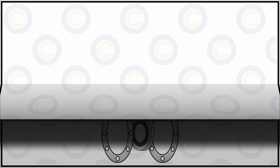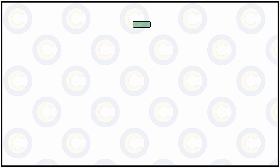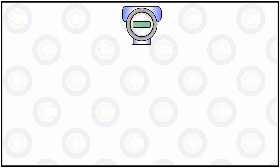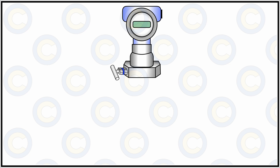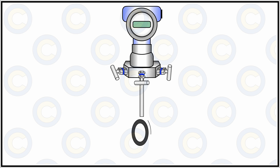A differential pressure transmitter is used at places where a pressure differential exists. As the name implies, for a pressure differential to exist there would be a high pressure side and a low pressure side — two sides of flow and two sides of pressure segregated by a particular element. The DP transmitter gauges this differential, converts it into an electrical signal, and sends it to a final display device where it is shown in numeric or analog fashion for the user to interpret parameters such as level, pressure, difference in pressure, or hydraulic pressure status.